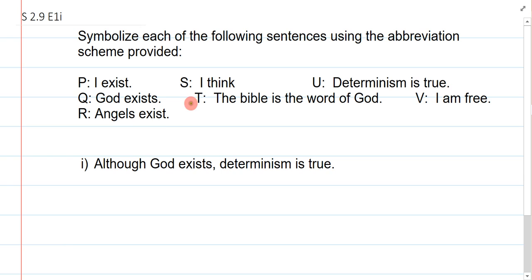So, for this one, this says, although God exists, determinism is true. Now, again, we just want to recognize some basic things. So, over here, I have a comma, which we should recognize as indicating a main break. And I have this important word here, although. Now, again, this is the same story as before. We just need to recognize that although is a stylistic variant for and.